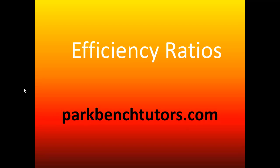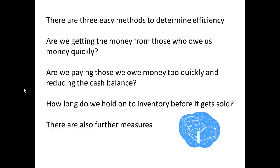How do we measure efficiency? There are three easy methods to determine efficiency. They relate to whether we're getting our money quickly enough, whether we are paying our creditors in a suitable manner, and whether our inventory is being moved quickly enough — in other words, are we selling enough quickly? There are other measures but these are the three we will concentrate on for business studies.